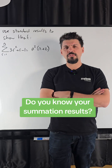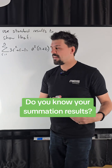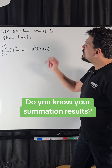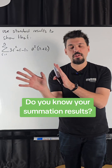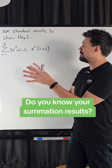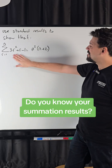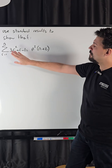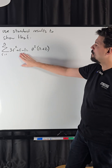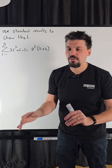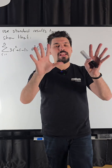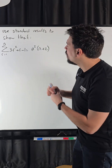Do you know your summation results? Let's find out. We are going to use our standard summation results to show this result. The sum of 3r squared plus r minus 1 is n squared times n plus 2. Nice and simple.